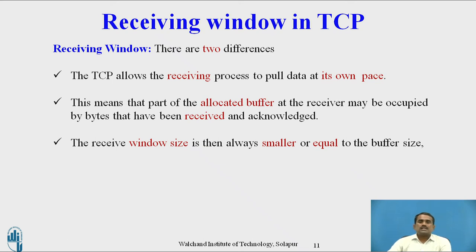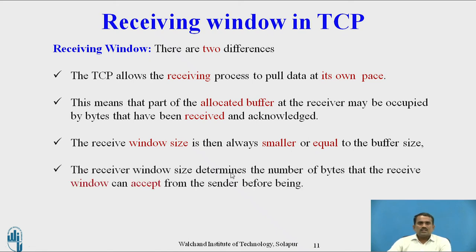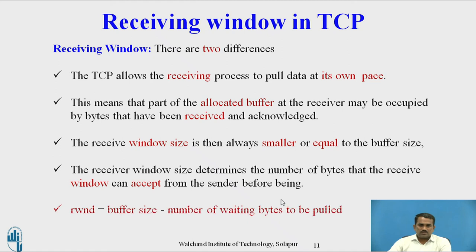The receive window size is always smaller than or equal to the buffer size — it should not be greater than that, because we must confirm whether data has reached the destination. Before transmitting, we must check the buffer size and send data based on that. The receive window size determines the number of bytes the receive window can accept from the sender. The formula is: receive window equals buffer size minus the number of waiting bytes to be pulled by the client.